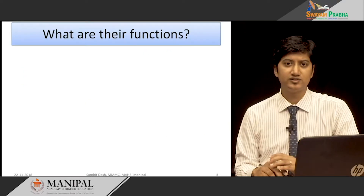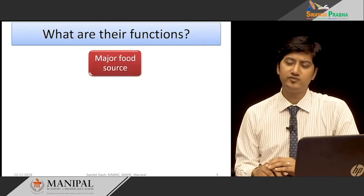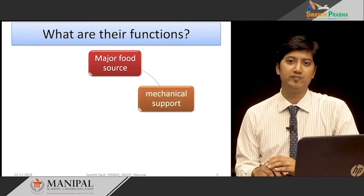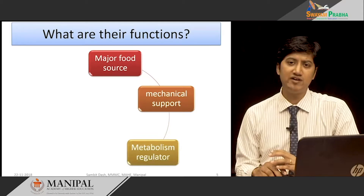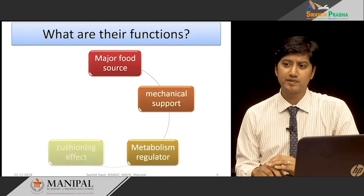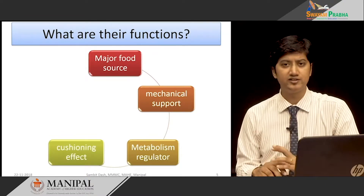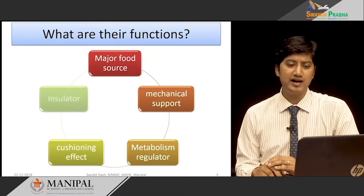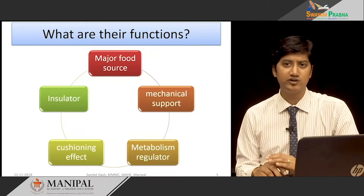Let us see the functions of adipose tissue. They serve mainly as a major food source for the body and provide mechanical support. They have an endocrine function where they regulate metabolism. They provide a cushioning effect to internal organs and also function as an insulator for our body.